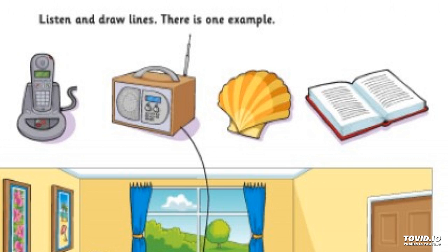Three. And now please put the phone on the mat. The phone? Yes. Put it on the mat. All right. I'm drawing that line now. Four. Now the camera — put it in the cupboard. Where? Put the camera in the cupboard. OK.